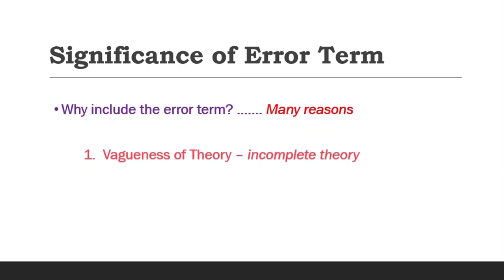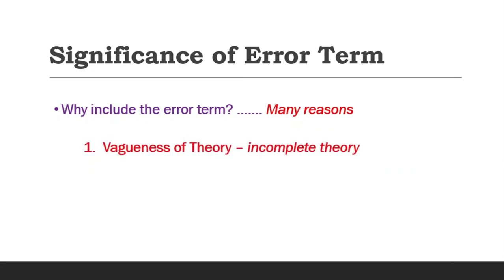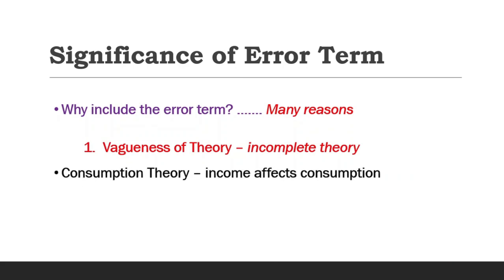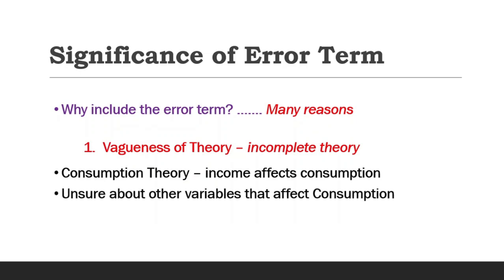The first reason is vagueness of theory. The theory determining the behavior of y often might be incomplete. For instance, we might know of the consumption theory where income affects consumption, but we might be ignorant or unsure about the other variables that can also affect consumption. Thus, the parameter u is used as a substitute for all the omitted variables from the model.